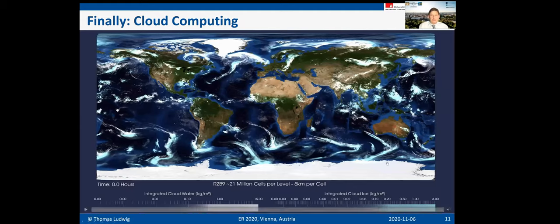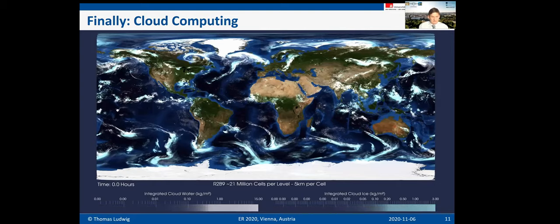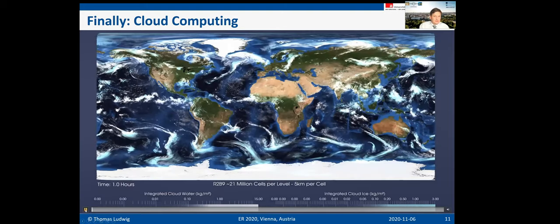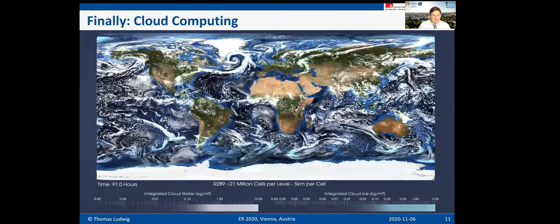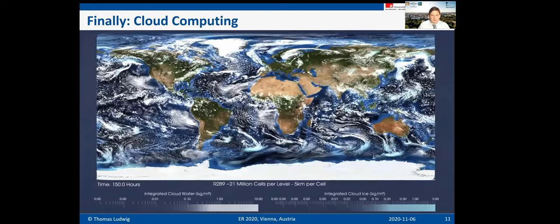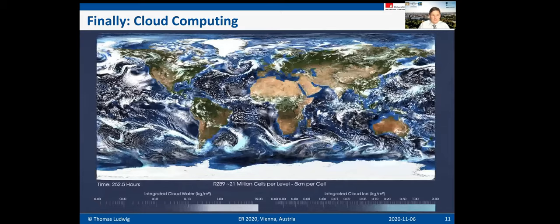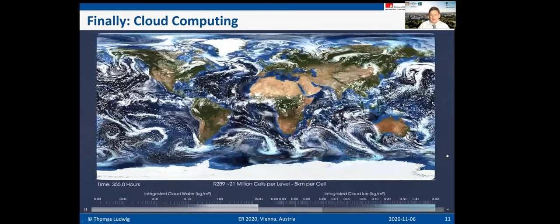The most important challenge today is cloud computing — simulating clouds on a global scale. I'll show a short film of a cloud simulation with a 5 km grid per cell and 21 million cells. The video may not run smoothly in this conference, but it should give an impression. If you could see it directly, you would see cloud movement that really looks like a satellite film when time is accelerated — a simulation of 21 days.